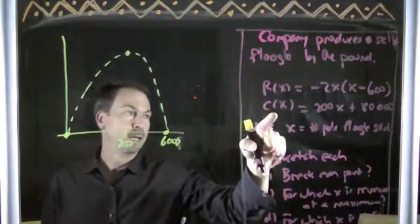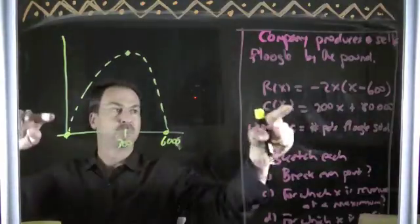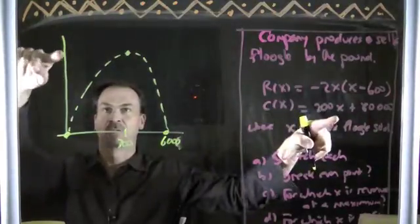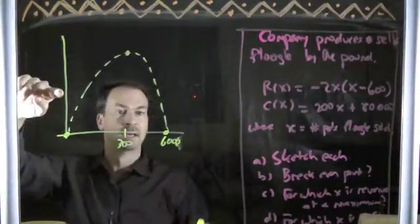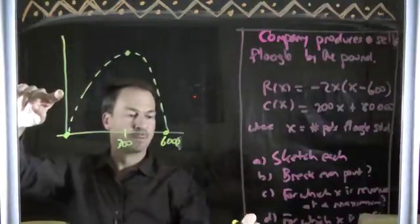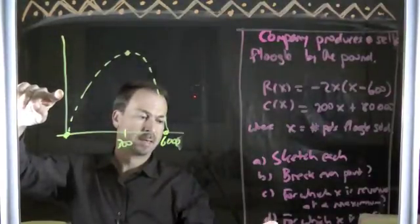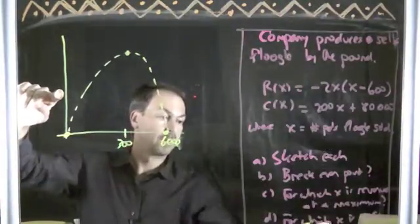Cost function. I'll draw it on the same set of axes. It's given by a straight line graph at 80,000 plus 200x. So it's going to be a positive slope starting at 80,000 on the axis. The trouble is I don't know where that 80,000 is. Alright, I have to work out what x is. But I put in x equals 300. I get r of 300. I'll do it down here. I hope you can still see it.